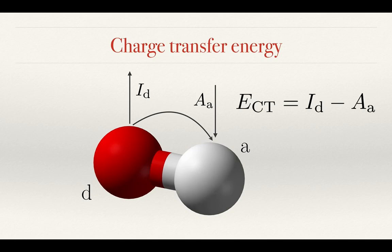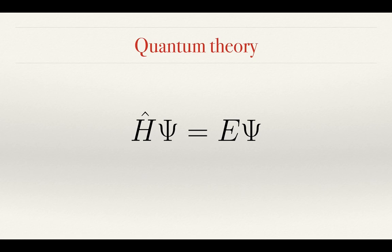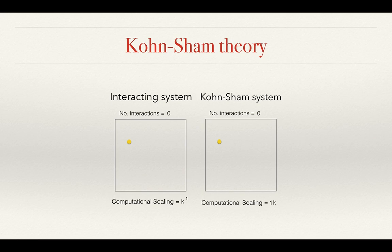In principle, the charge transfer energy can be obtained from the many-body Schrödinger equation. However, in practice, this equation cannot be solved for most systems, owing to the interaction between the electrons. Kohn-Sham theory offers an alternative, more practical way of calculating the charge transfer energy, which, as I will show, is exact in principle.